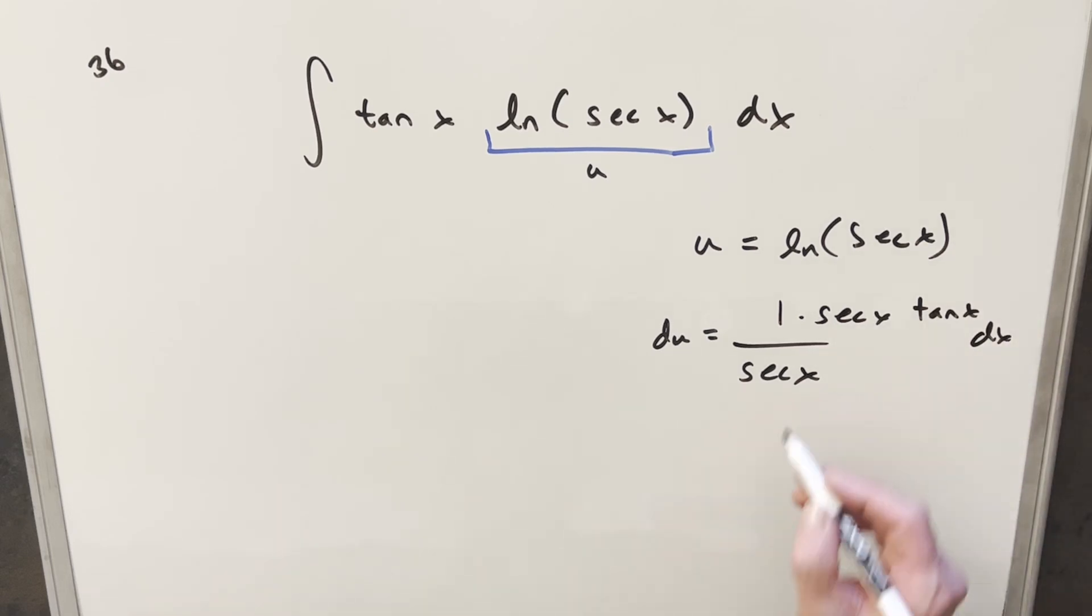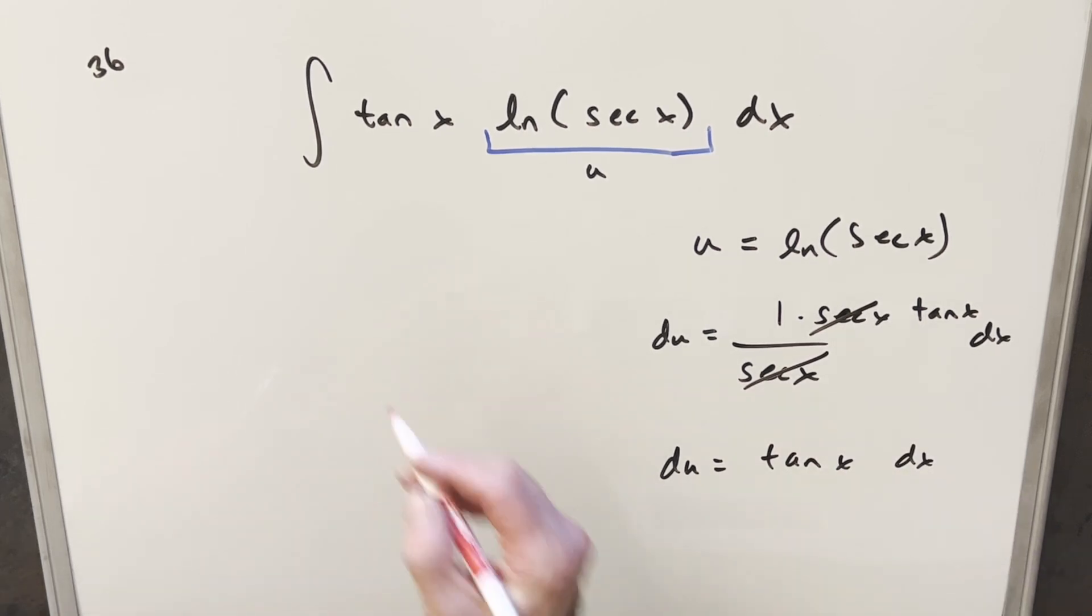But then we can just cancel a secant x here in the numerator and denominator and rewrite this. So our value for du is just going to be tan x dx, but that's pretty convenient because what we have right here, putting the tan x with the dx, is the same thing as our du.